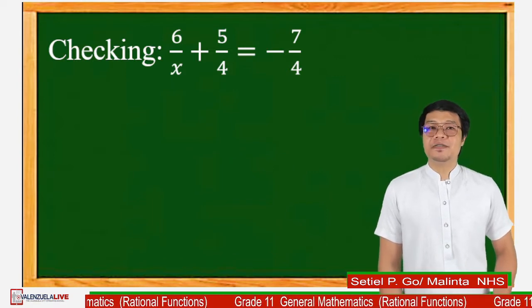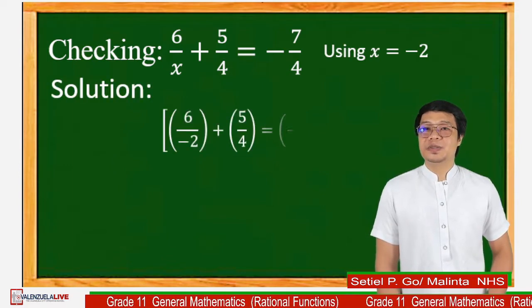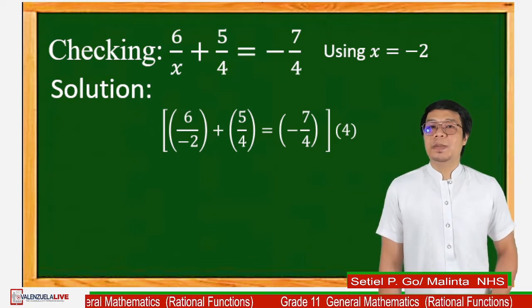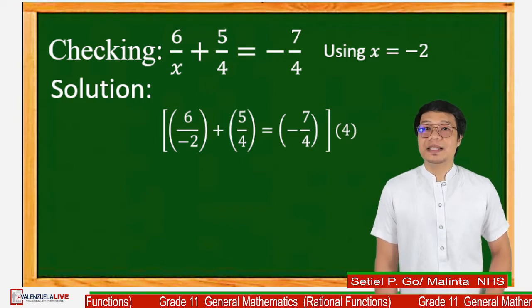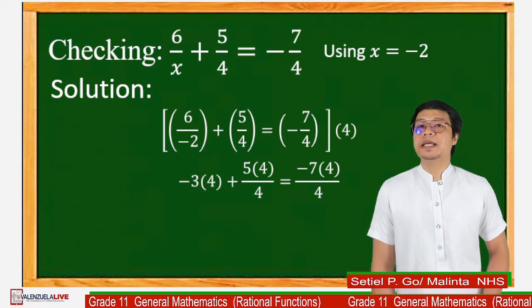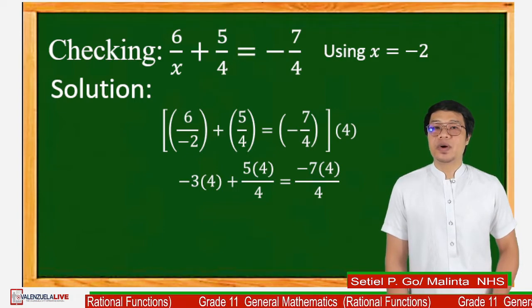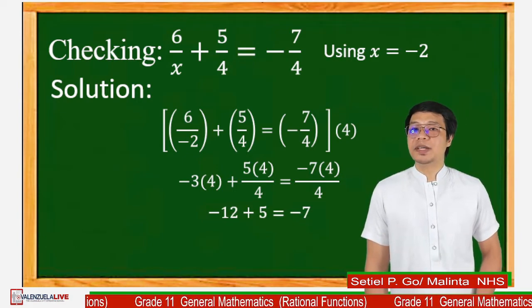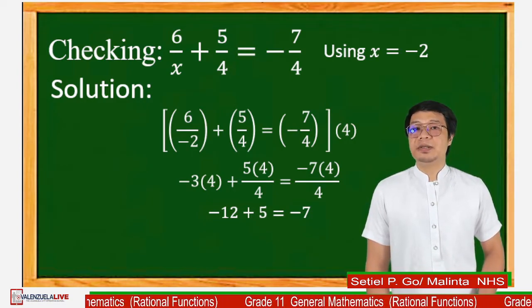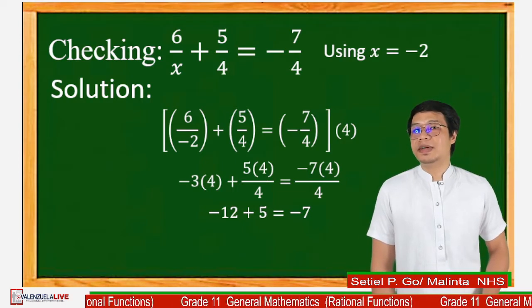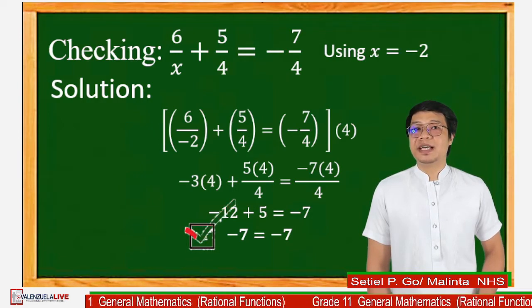To check if x = negative 2 is correct: substitute into the original equation — (6 / −2) + (5/4) = −7/4. Multiplying through by the LCD of 4: negative 3 times 4 plus 5 equals negative 7. So negative 12 plus 5 equals negative 7, which gives negative 7 equals negative 7. So it means the value of x = negative 2 is correct.